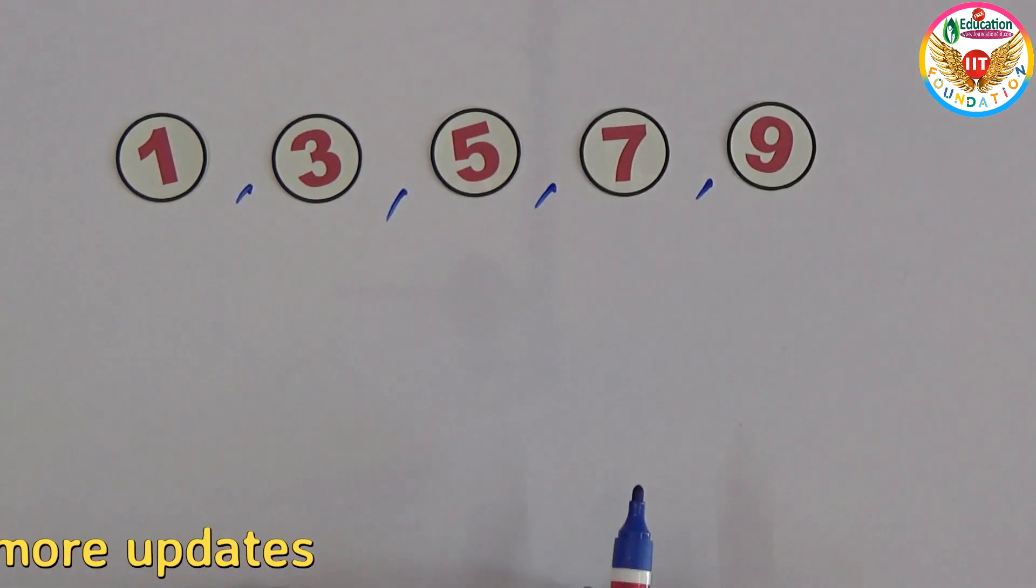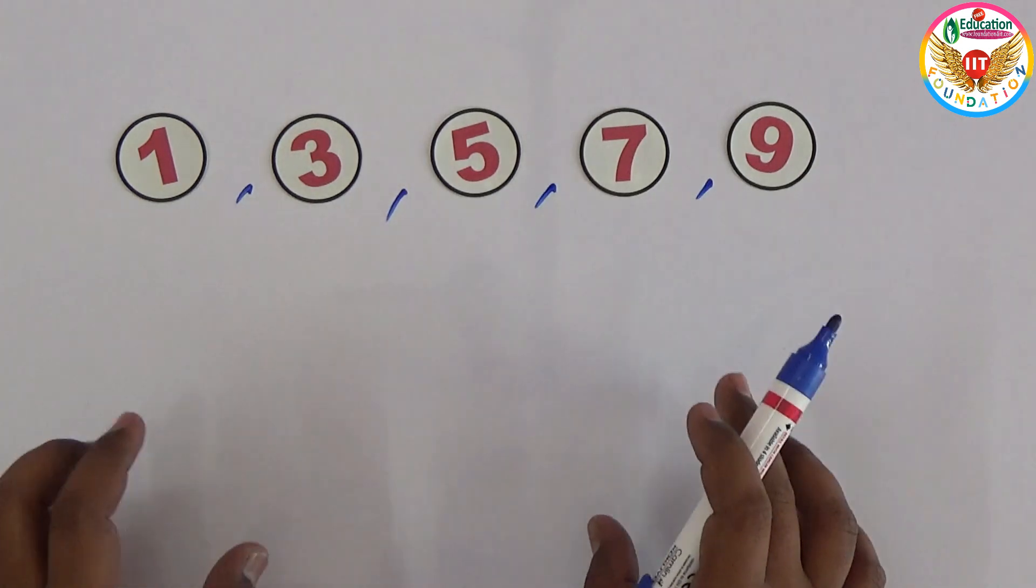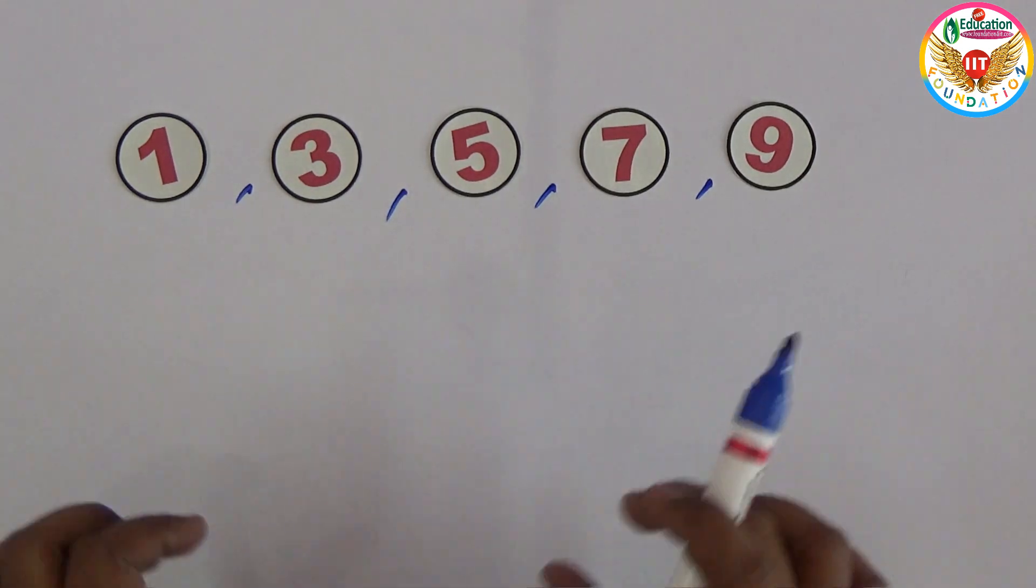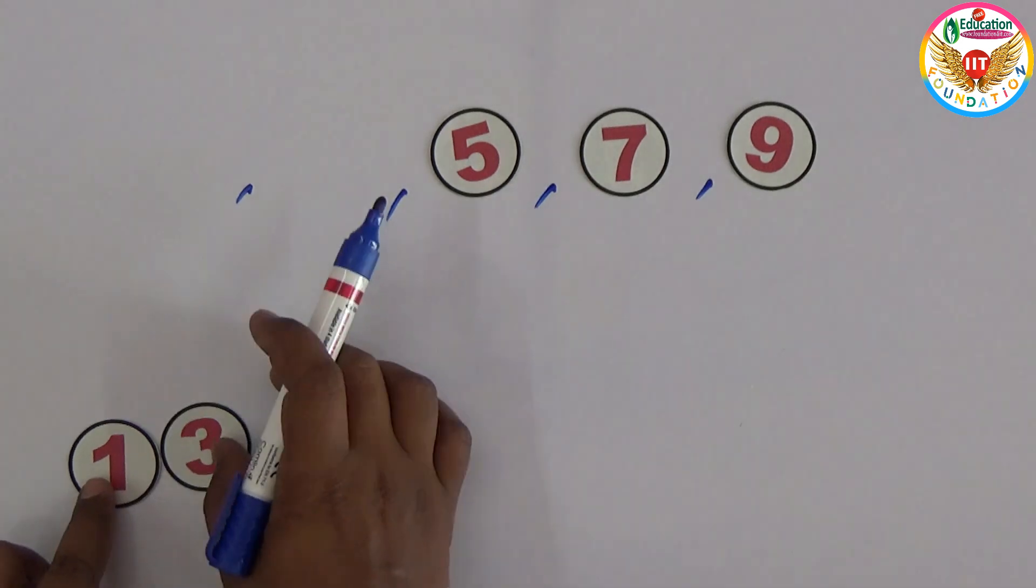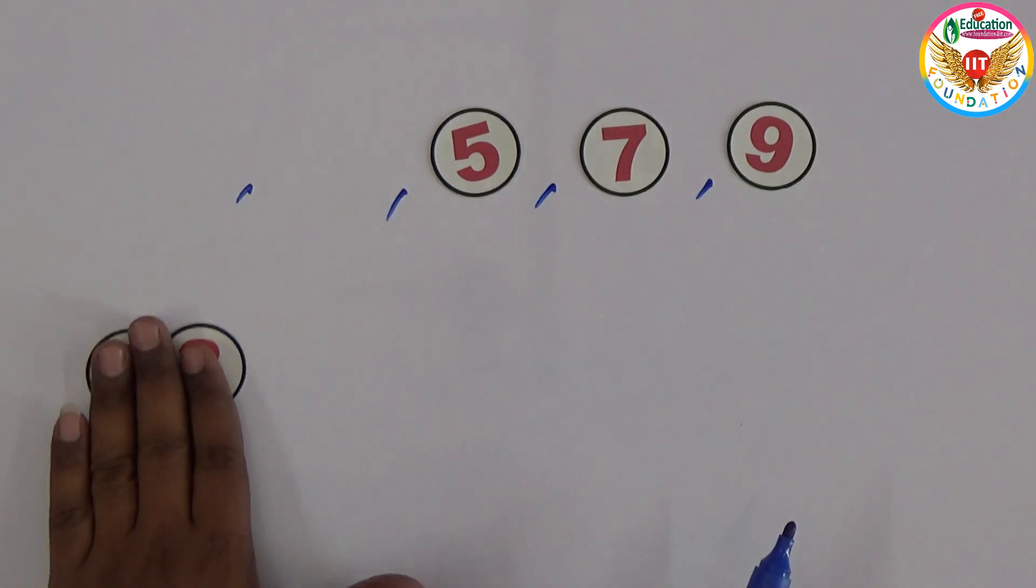You can try the answer also. For example, from these five digits you should take two digits as a number. So if I take 1 and 3, this is 13, so just take it as 13.